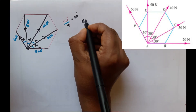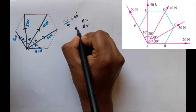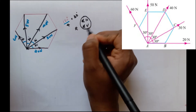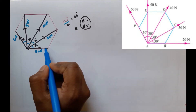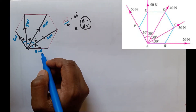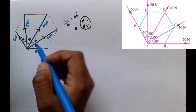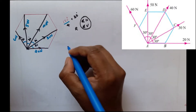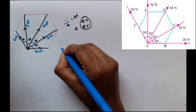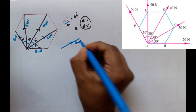The first step is to resolve sigma H and sigma V — the horizontal and vertical components. We will resolve each force. The 20N force is already acting along a horizontal axis. The next force is the 30N force, which is an inclined force, so we resolve this inclined force.